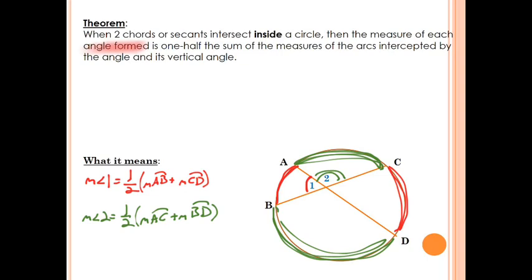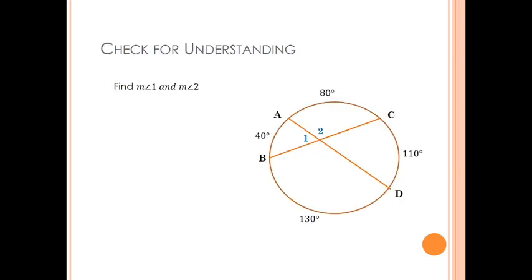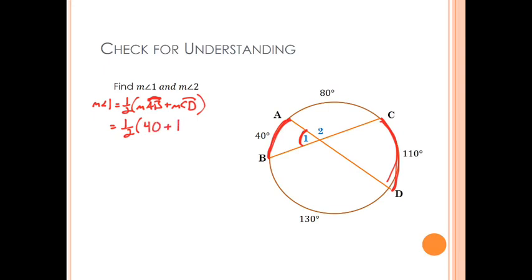That's the property we're going to use on this check for understanding. We're going to find both the measure of angle one and angle two. To find the measure of angle one using our property, the measure of angle one is one-half the sum of arc AB and arc CD. That would be one-half of 40 degrees plus 110 degrees, or one-half of 150, which is 75 degrees. So angle one and its vertical angle both have a measure of 75 degrees.